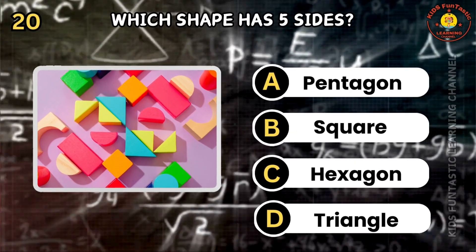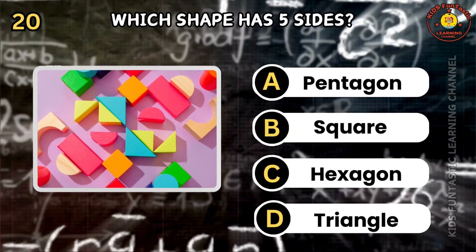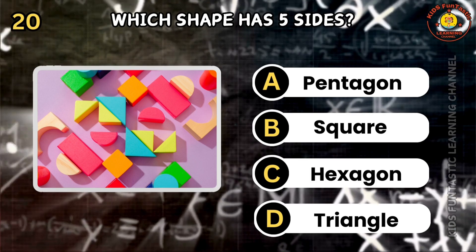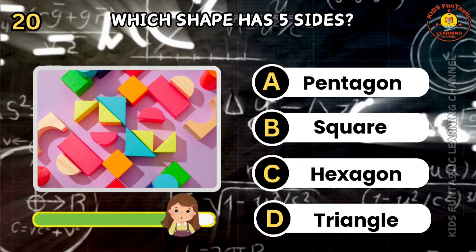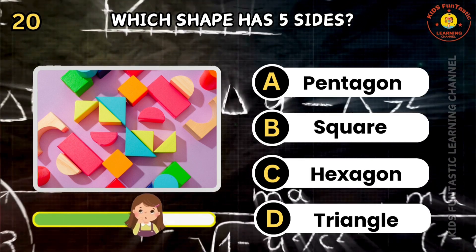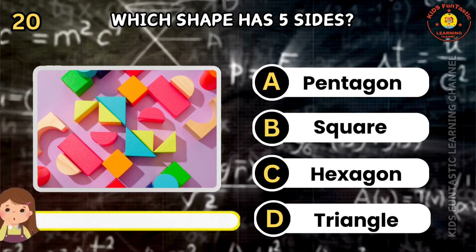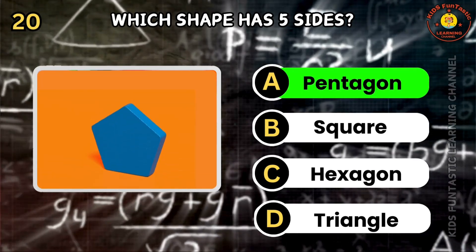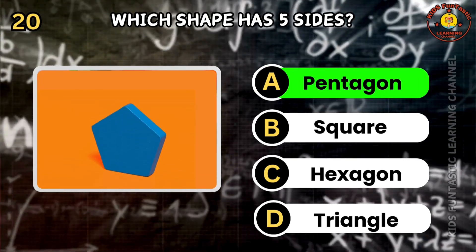Question 20. Which shape has five sides? A: pentagon, B: square, C: hexagon, D: triangle. You're on the right track. The correct answer is A. A pentagon has five sides.